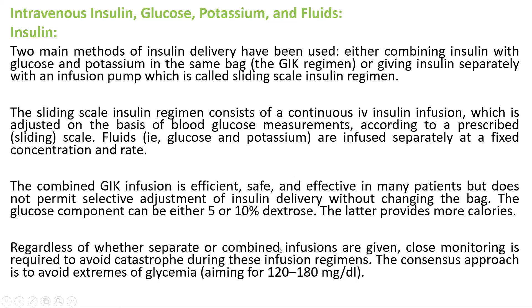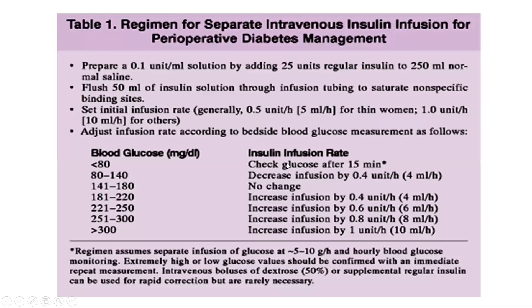Regardless of whether separate or combined infusions are given, close monitoring is required to avoid catastrophe during these infusion regimens. The consensus approach is to avoid extremes of glycemia, aiming for 120 to 180 mg/dL. This is covered in Table 1, which describes the regimen for separate intravenous insulin infusion for preoperative diabetes management.